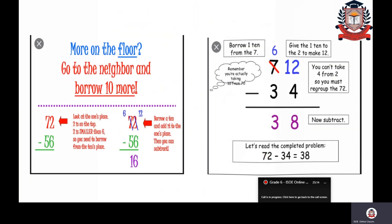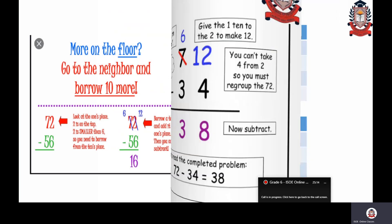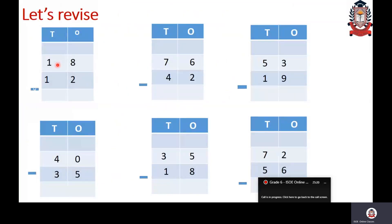I hope you understood this subtraction concept. Let us do a small exercise. I have two numbers: 18 and 12. Subtract 12 from 18. First rule: always start subtracting from ones place. Second rule: check if there is more on top or more on bottom. 8 minus 2 — more on top, so subtract directly. 8 minus 2 gives 6. Then 1 minus 1 gives 0.